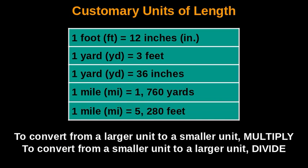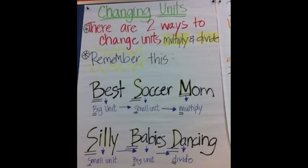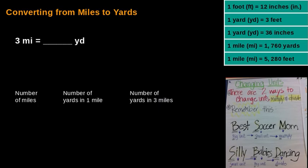To convert from a larger unit to a smaller unit, you multiply. To convert from a smaller unit to a larger unit, you divide. Here's an acronym to help you remember: 'Best Soccer Mom' — from big unit to small unit, multiply. And 'Silly Babies Dancing' — from small units to big units, you divide.